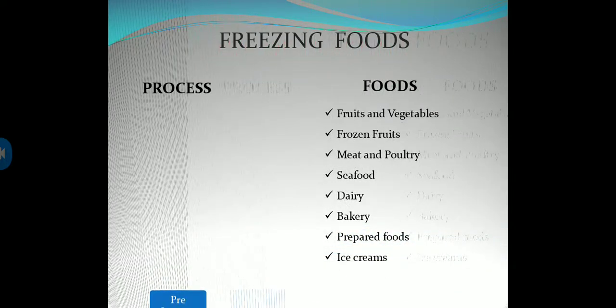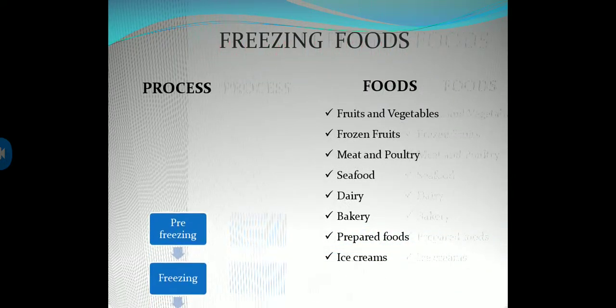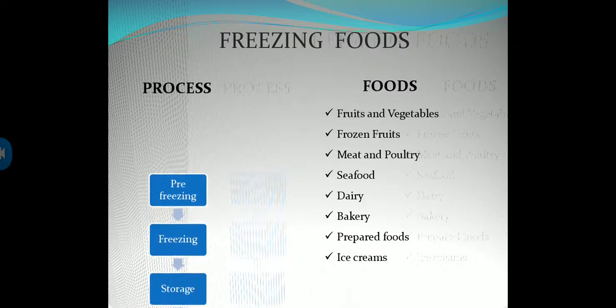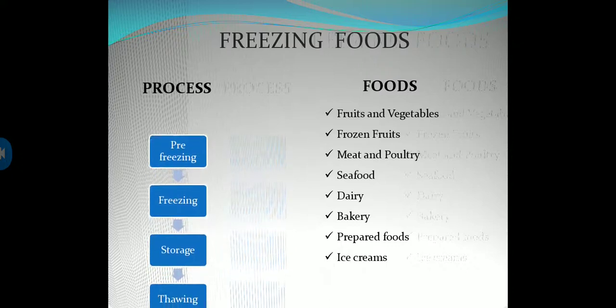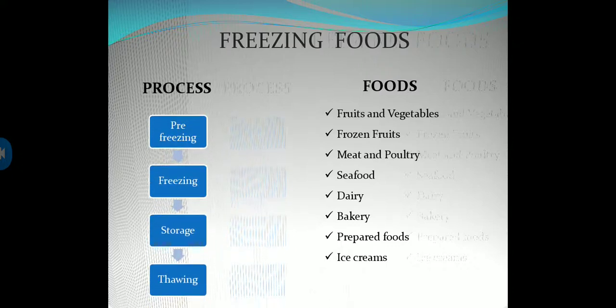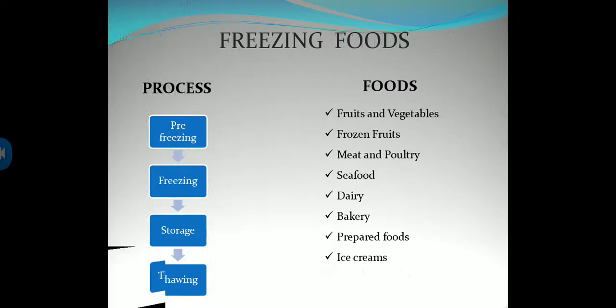Frozen foods categories include: fruits, vegetables, meat and poultry, seafood, dairy, bakery, prepared foods, and ice creams. The process steps are: pre-freezing, freezing, then storage.